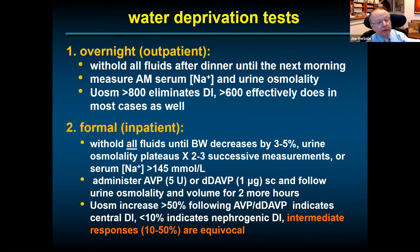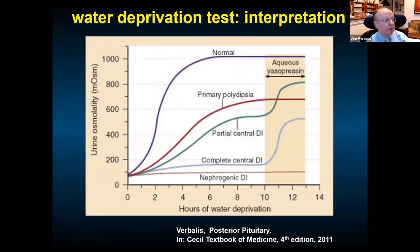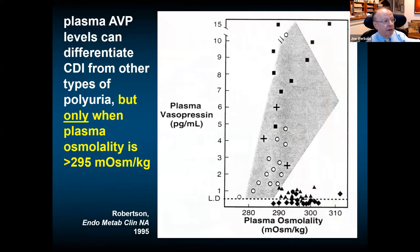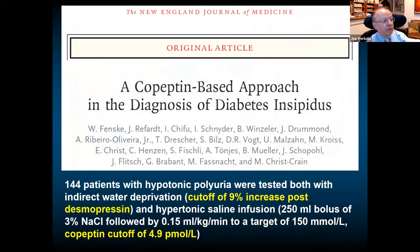Traditionally, central DI was differentiated from primary polydipsia using a water deprivation test — first overnight outpatient, then inpatient if needed. Complete central DI shows no urine concentration but responds to desmopressin (DDAVP); nephrogenic DI shows neither response. However, the overlap between partial central DI and primary polydipsia is substantial, making differential diagnosis difficult even with AVP levels.